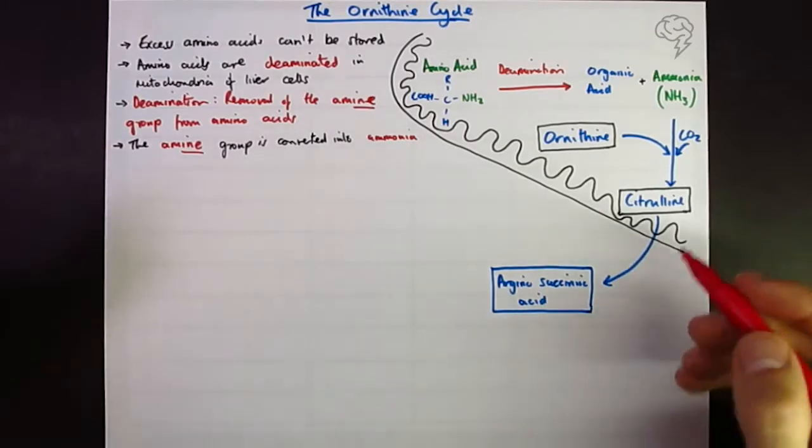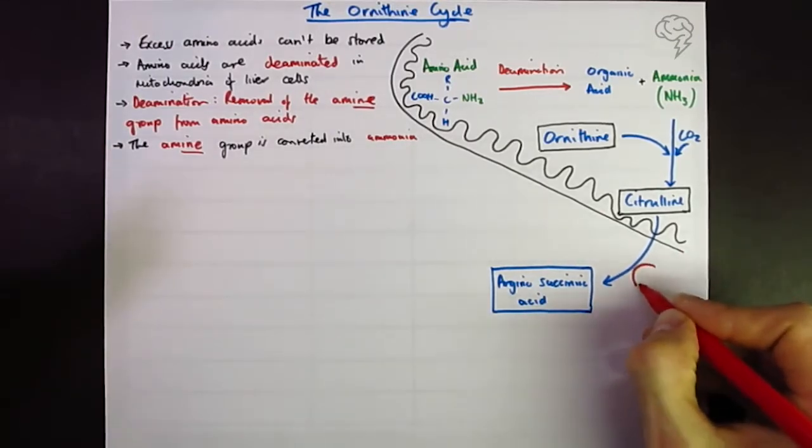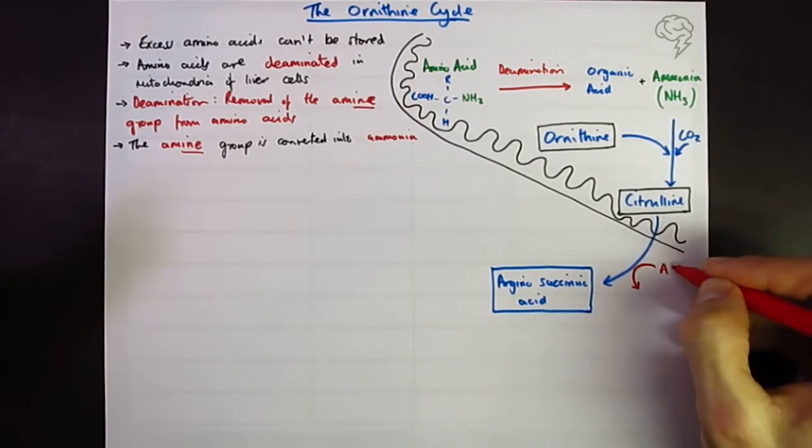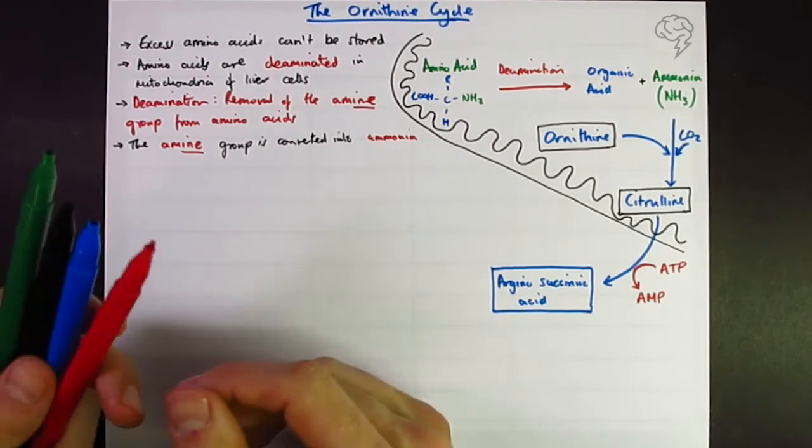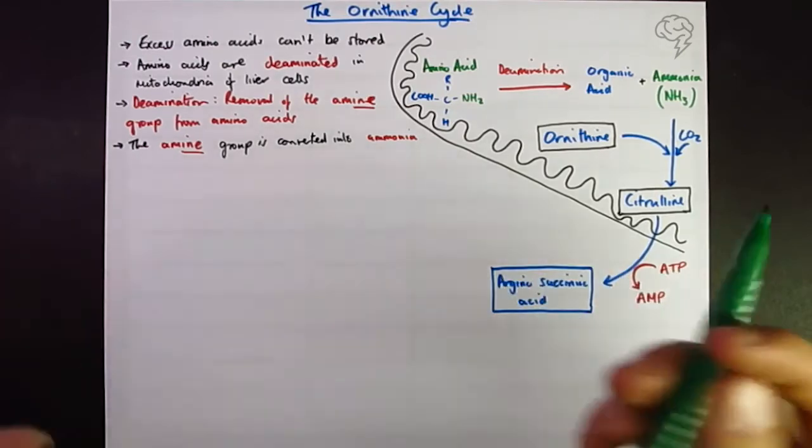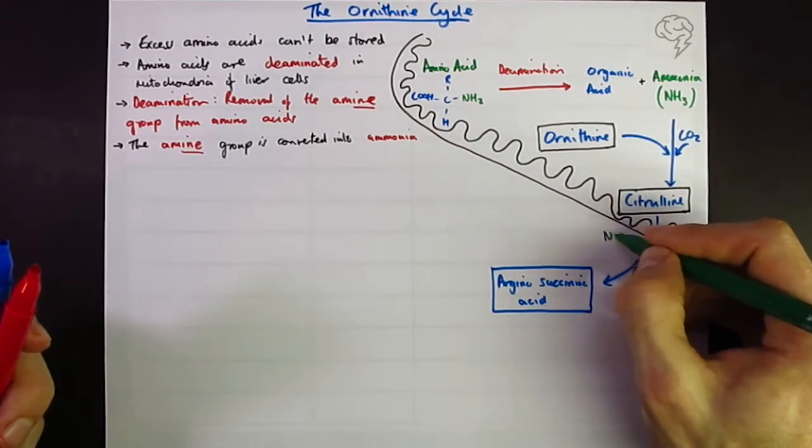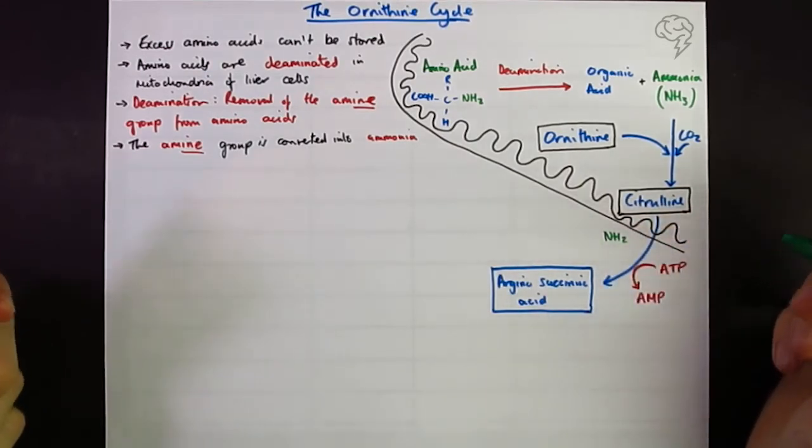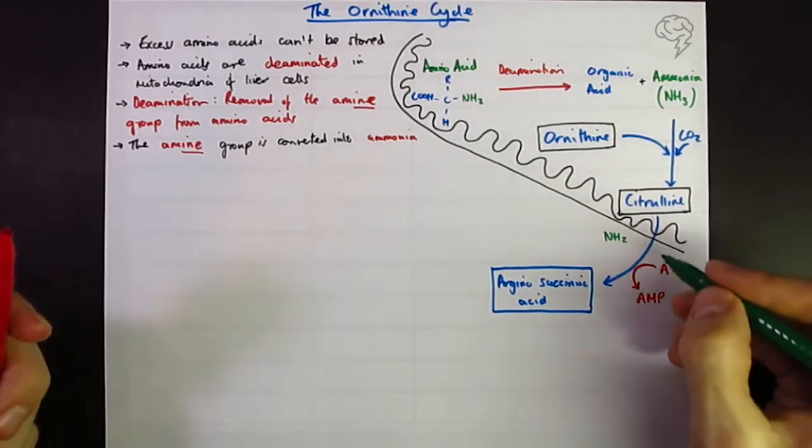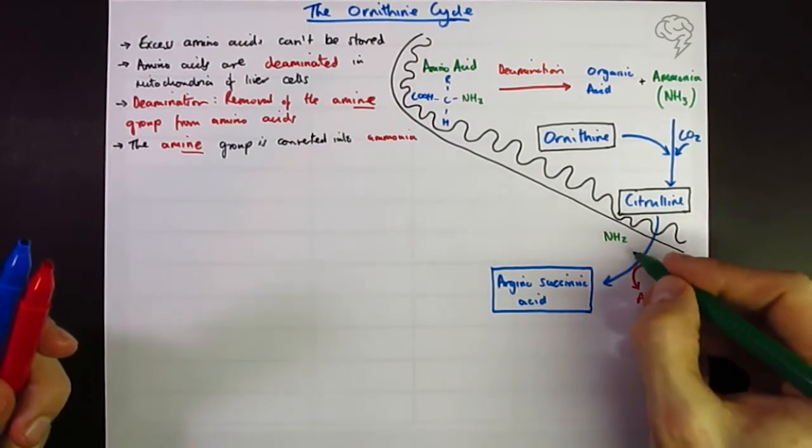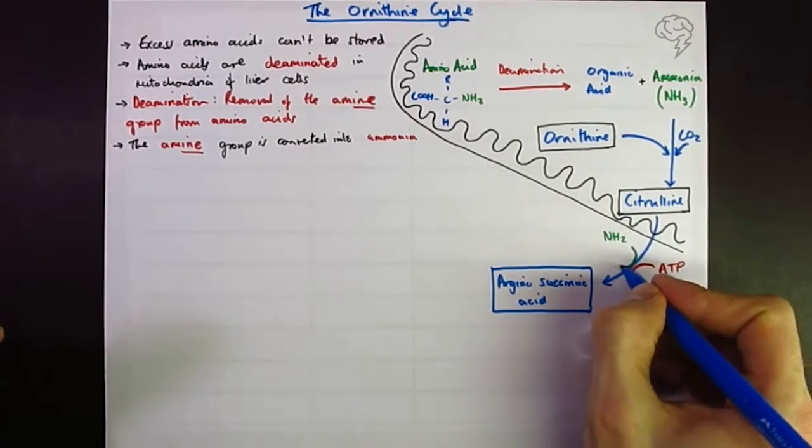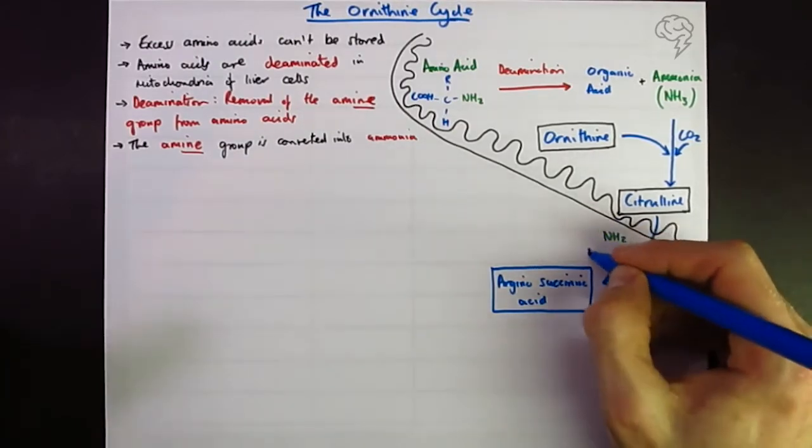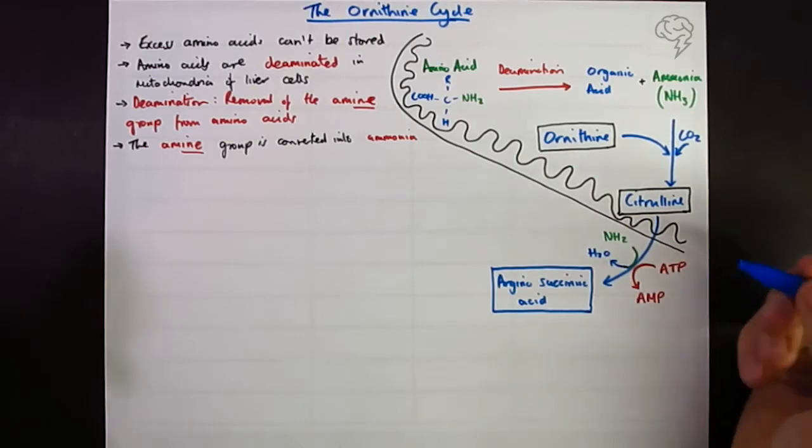I'm going to put these in blue just to show the black is inside the mitochondria and the blue is outside the mitochondrion in the cytoplasm of the liver cell. To make this happen we need to add some ATP - in fact we don't form ADP, we actually form adenosine monophosphate (AMP), so two phosphate bonds are broken there. Then we add some more nitrogen in the form of NH2, a compound called aspartate. Water comes out.